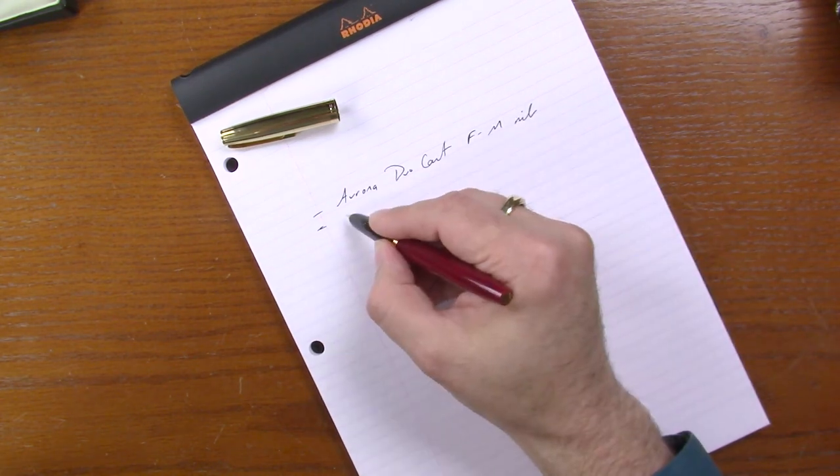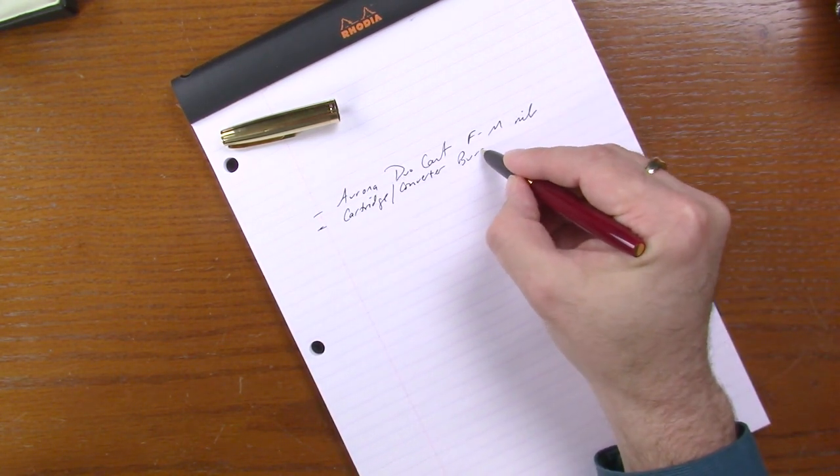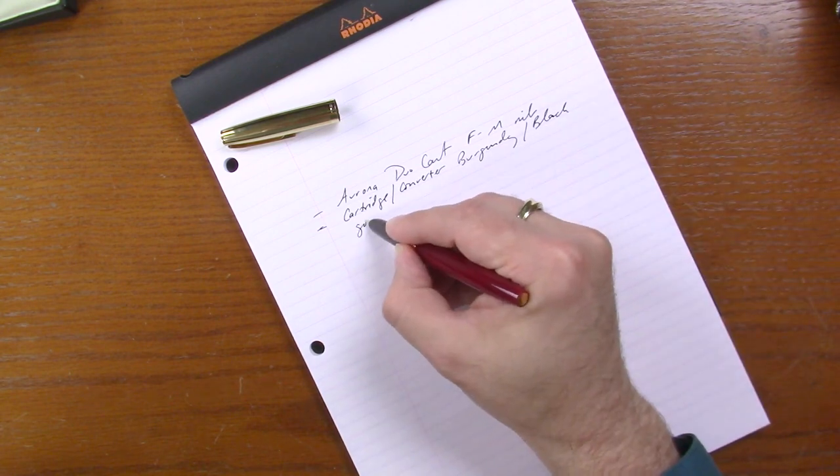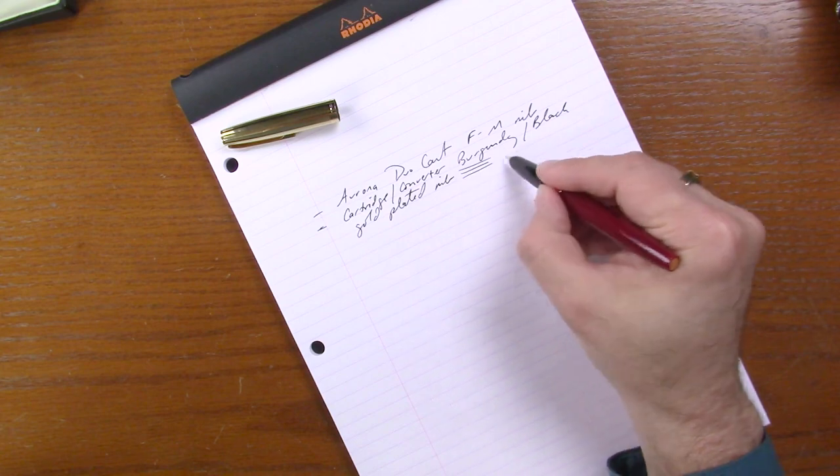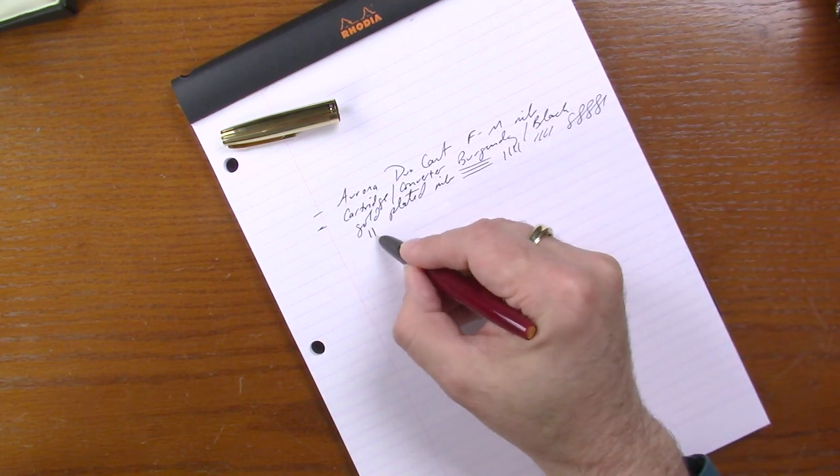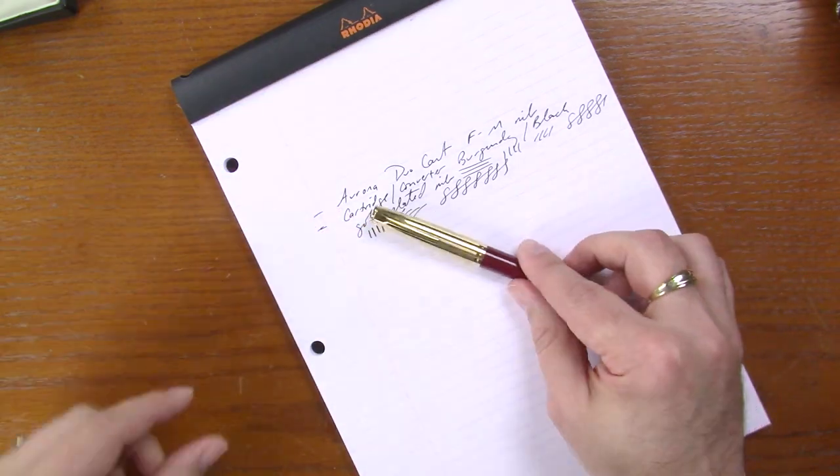So there are really no nib options. Basically, your options are whether you want black or you want the burgundy. It has a little bit of feedback, kind of similar to almost a Sailor nib. And it's going to be a good pen to make some quick notes. But again, it's not a soft nib. Don't try to flex it.